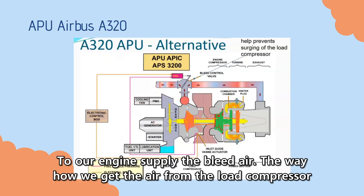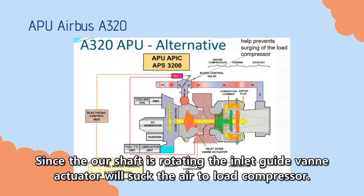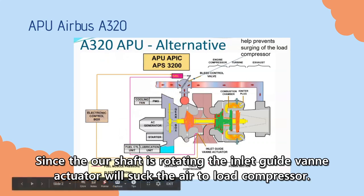To our engine, it supplies the bleed air. The way we get the air is from the load compressor. Since our shaft is rotating from the inlet guide vane, the AC generator will suck the air to the load compressor.